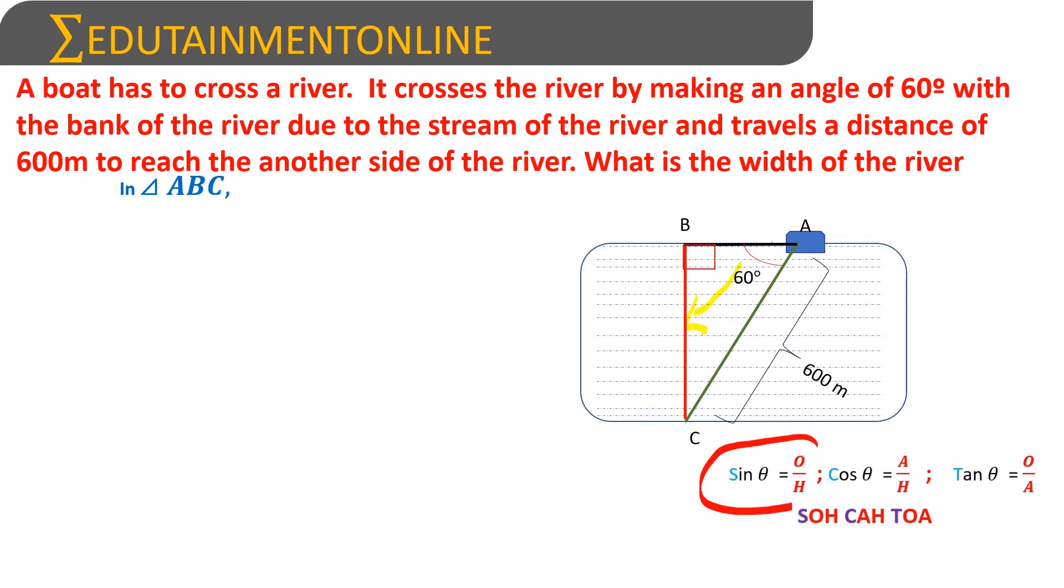We have the opposite side and hypotenuse, so we'll use sine theta, which is opposite side by hypotenuse. With respect to this angle, we can write sin A equals BC over AC. Since A is 60 degrees and AC is 600 meters...